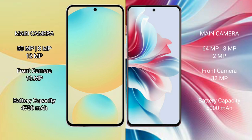Samsung Galaxy S24 FE features a rear triple camera setup: 50MP, 8MP, and 12MP, with a 10MP front camera. Oppo F25 Pro also features a rear triple camera setup: 64MP, 8MP, and 2MP, with a 32MP front camera.